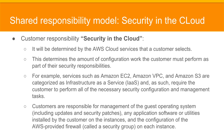It is the customer's responsibility to provide security in the cloud. This is determined by the AWS cloud services that a customer selects, which determines the amount of configuration work the customer must perform. For example, services such as Amazon EC2, Amazon VPC, and Amazon S3 are categorized as Infrastructure as a Service and require the customer to perform all necessary security configurations. If a customer deploys an Amazon EC2 instance, they are responsible for management of the guest operating system, any application software or utilities installed on the instances, and the configuration of the AWS provided firewall on each instance.